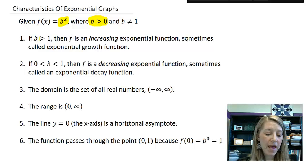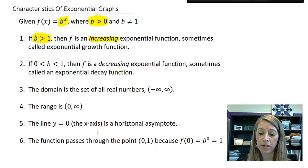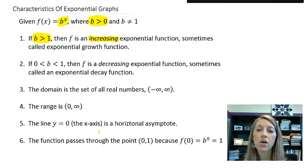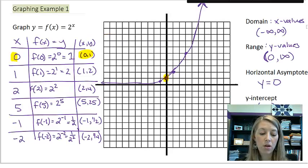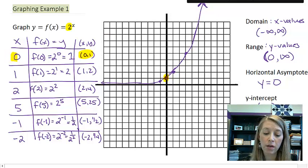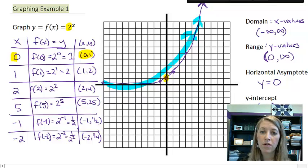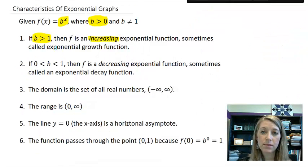Here, if our base is greater than one, then we have an increasing exponential function. And we saw that in the first example that we graphed in the last video. Notice our base was greater than one, and we saw a graph that was increasing, meaning it got larger from left to right.